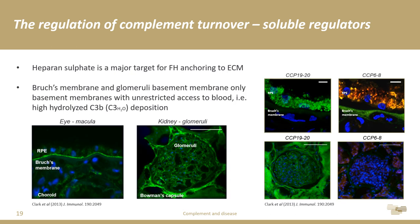It is the recognition of heparan sulfate by factor H that allows it to protect basement membranes such as Bruch's membrane and the glomerular basement membrane within human kidneys. Uniquely, unlike any other basement membrane in the human body, these two are in direct contact with the blood — making them incredibly susceptible to C3 deposition. The binding of factor H to these basement membranes is therefore imperative to prevent complement overactivation.